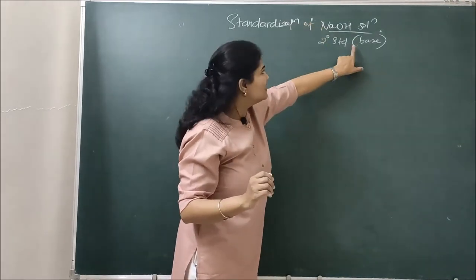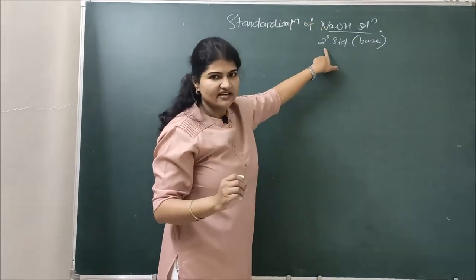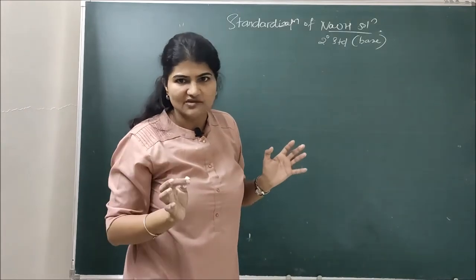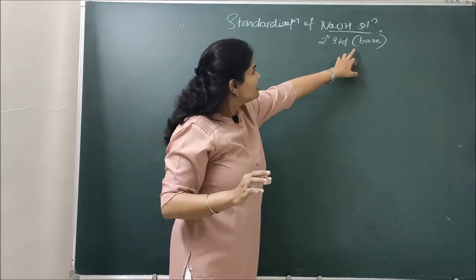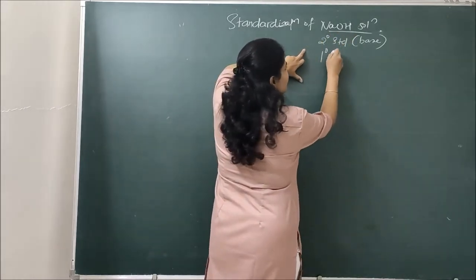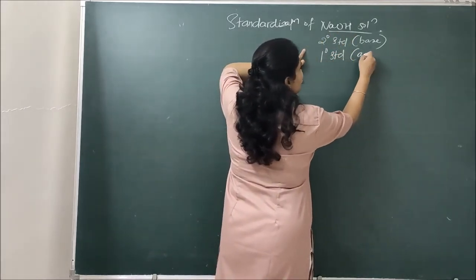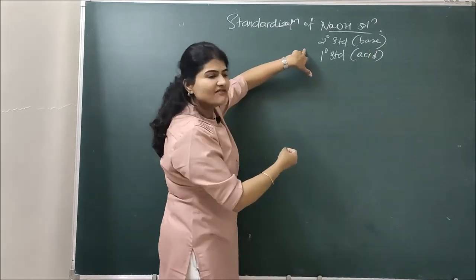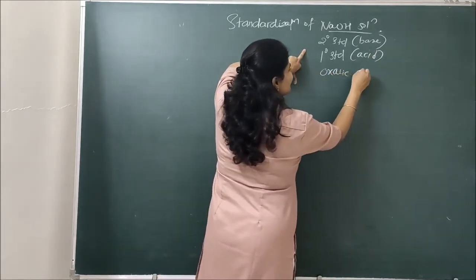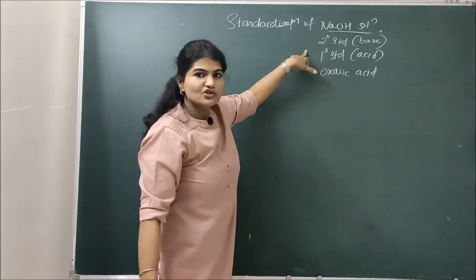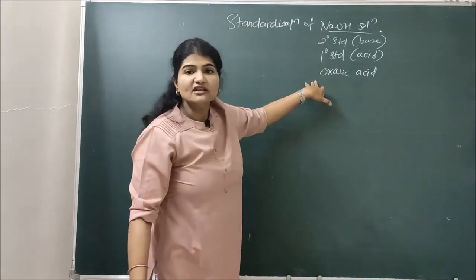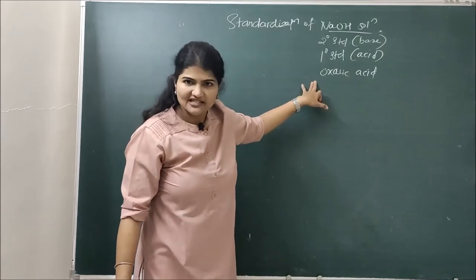NaOH is a strong base and it is a secondary standard substance. We will use aqueous acid-base titration for this. If the secondary standard is a base, I will need a primary standard which is an acid. Here I will use oxalic acid as my primary standard substance. So this is: standardization of NaOH solution using oxalic acid as a primary standard.